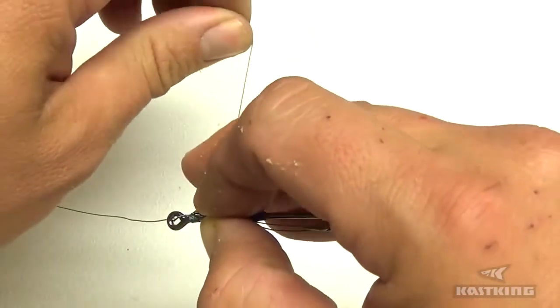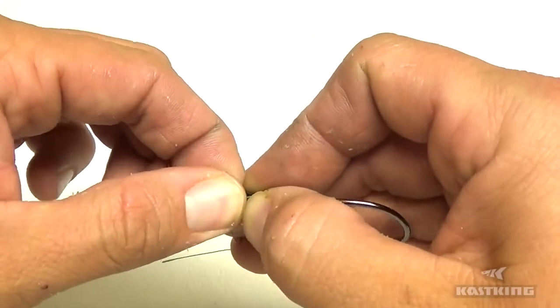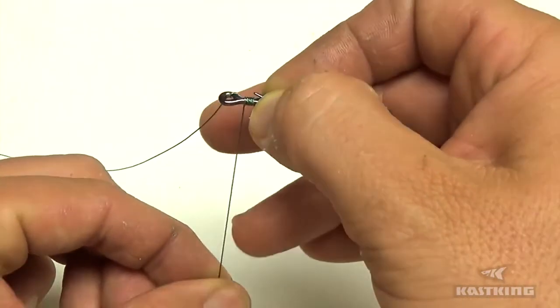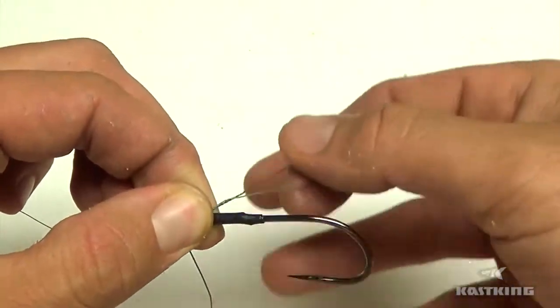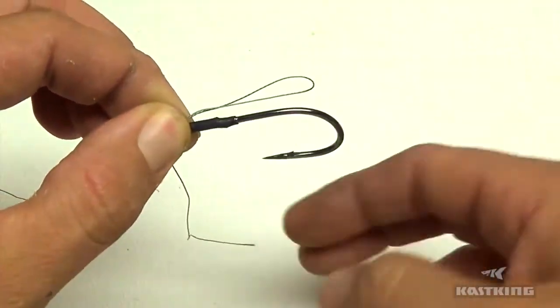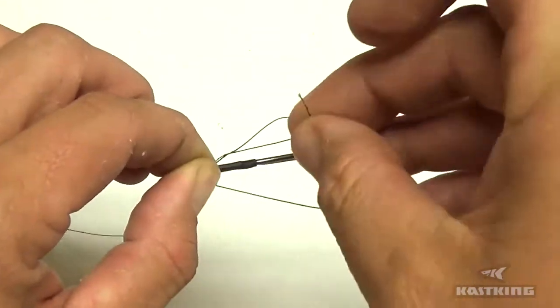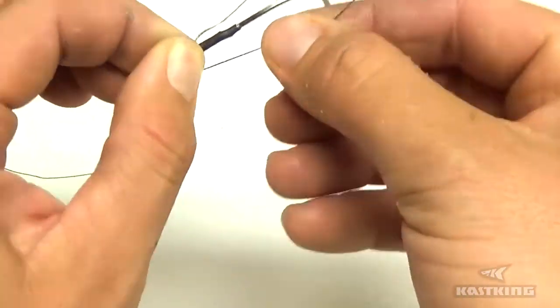Okay, that's probably 6 or 8 or so. Then what you're going to do is you're going to take your tag end and you're going to go back to that loop that we made and you're going to pass the tag end through that loop.